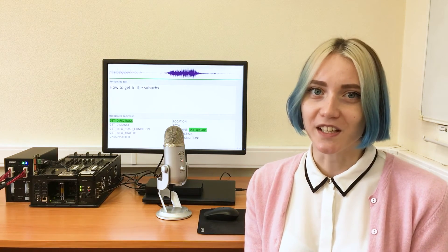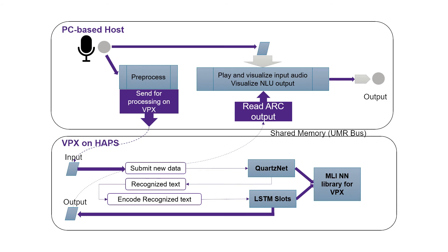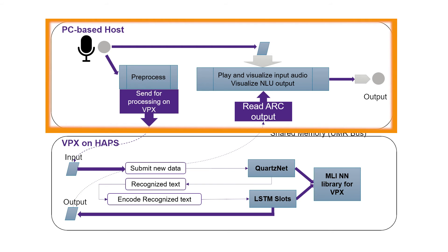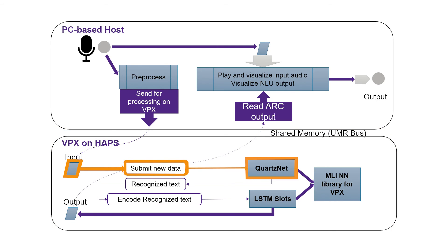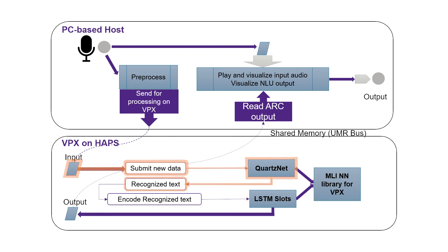Let's go into more details of the implementation. The demo contains two main parts: the host and the accelerator. The host is responsible for reading the audio file, doing any required preprocessing, sending the preprocessed input to the VPX processor, and receiving and visualizing the results. The ArcVPX processor runs two NN graphs using optimized MLI library kernels. First, it runs QuartzNet CNN on the preprocessed input to perform the speech recognition task. Then it encodes the resulting text and processes it with a lightweight LSTM encoder-decoder model to perform the joint slots and intent recognition.